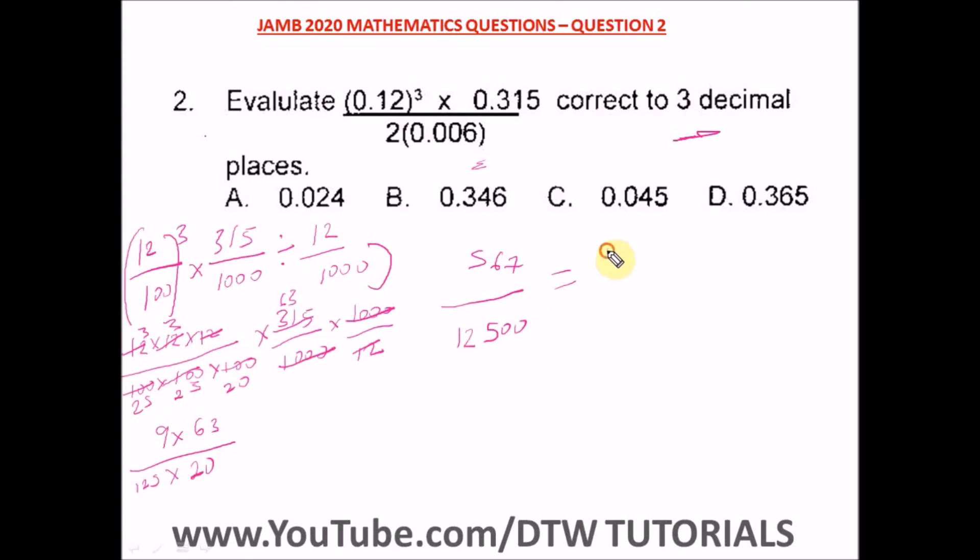If we punch this in our calculator, we have 0.045536. Remember, we are asked to take it to three decimal places.